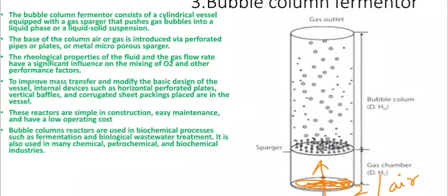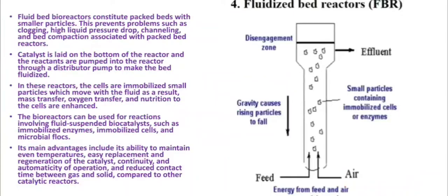The bubble column fermenter is simple in construction, easy to maintain, and has low operating cost. It is used in biochemical processes such as fermentation and biological wastewater treatment, and also in many chemical, petrochemical, and biochemical industries.